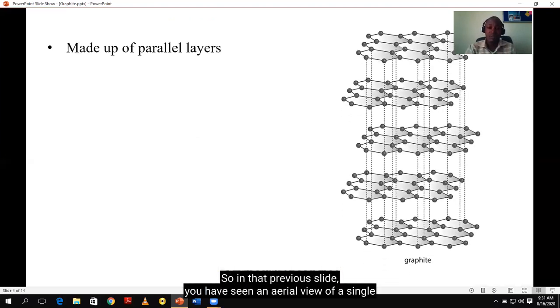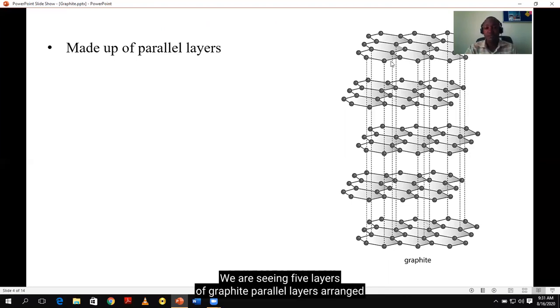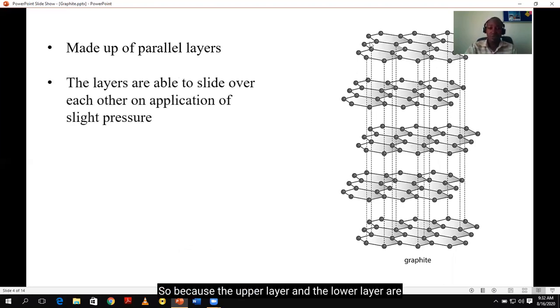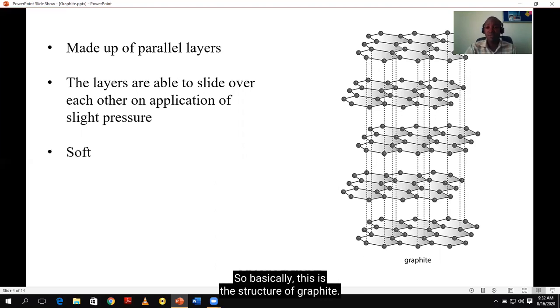So in that previous slide, you have seen an aerial view of a single layer of graphite atoms. However, graphite is made up of many layers. In this image, we are seeing five layers of graphite. Parallel layers are arranged in order, one after the other. So when you look at the dotted lines, the dotted lines will show weak forces of attraction that keep layers together, as we shall see later on. So because the upper layer and the lower layer are somehow being held by weak forces of attraction, if you apply pressure on one layer, it will always be able to slide over one another. That's why graphite can be used in pencils. And because there is spacing between one layer and another, we shall realize that actually graphite is soft and it has a lower density as compared to diamond. So basically, this is the structure of graphite. It's made up of layers that are arranged parallel to one another.